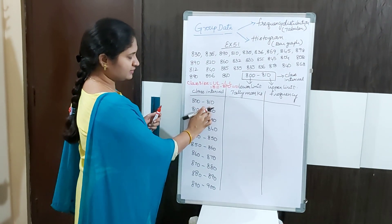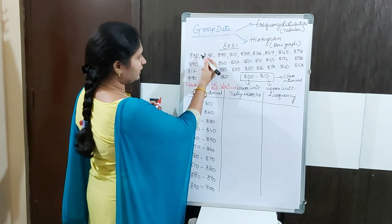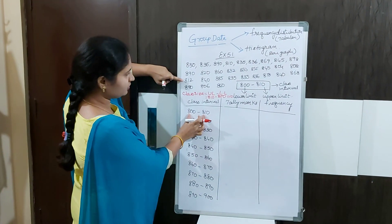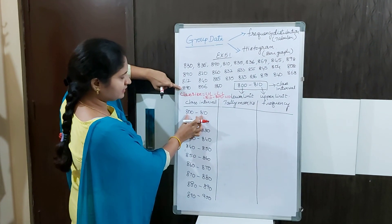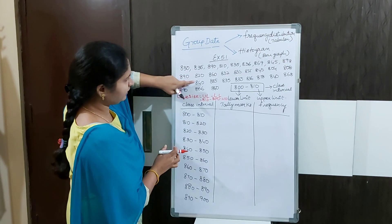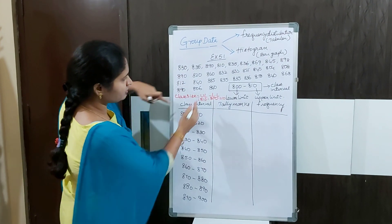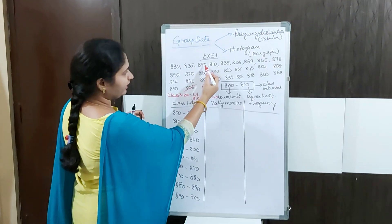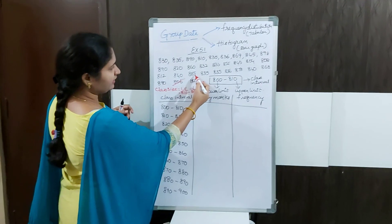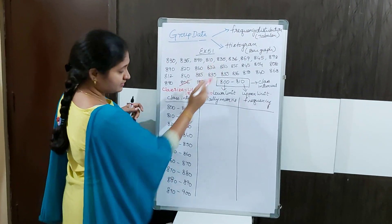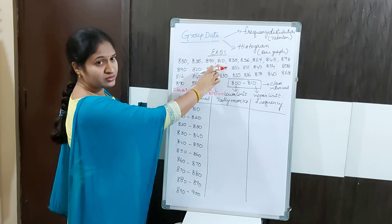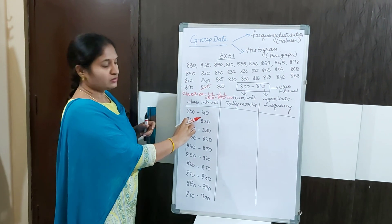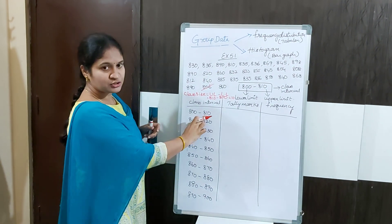So for 800 to 810, you count values from 800 up to 809. For example, 830 will not fall in this interval, nor will 890, 812, or 835. Only values like 806 and 808 fall here. Note that 810 will not be counted in the 800–810 interval since the upper limit is not included — this is a common mistake children make.